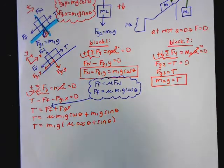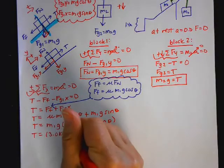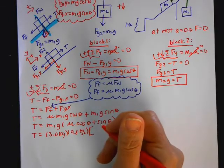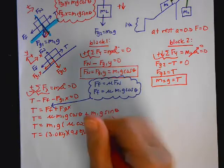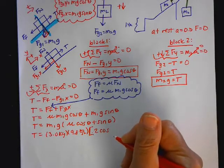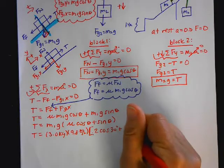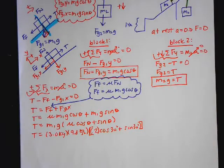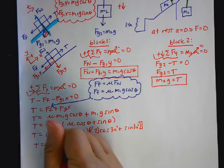So now I'll substitute in my values. This is 3 kilograms times 9.8 meters per second squared times parentheses mu, which is static 0.2, times the cosine of 30 degrees plus the sine of 30 degrees. So when I do all this on my calculator, T comes out to be 19.7 newtons.